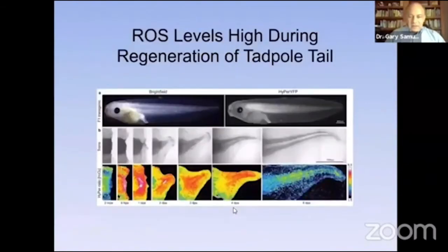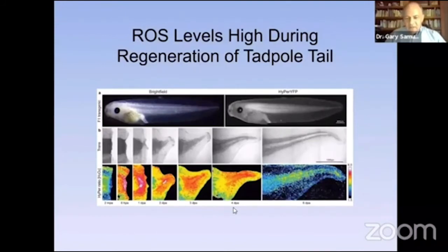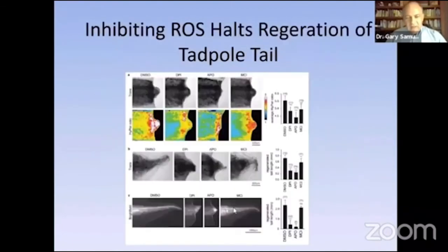We've found that the oxidants are very critical in the regrowth of tissue. This is a tadpole — you cut the tail off a tadpole and it regrows. The reds, oranges, and yellows shown are the redox signaling messengers, the oxidants inside the tissue, visualized with fluorescent markers. Notice that in the regeneration of the tail, the oxidants are very critical. In fact, when antioxidants were applied to eliminate the oxidants during the regeneration process, the tail did not regenerate. The redox signaling molecules were absolutely essential in the regeneration of tissue.